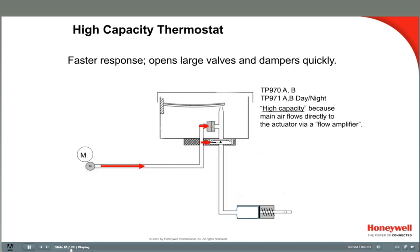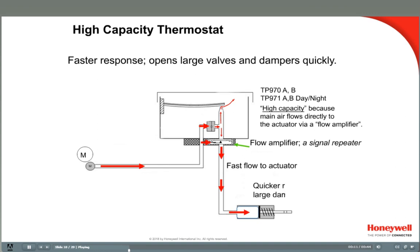The branch line output of a high-capacity thermostat responds very quickly due to the addition of a flow amplifier. Main air still travels through the restrictor to the nozzle bleed, but it also flows to a flow amplifier module prior to the restrictor. The nozzle pressure acts against the flow amplifier diaphragm, which repeats this signal into the branch line with high-volume air from the main air supply. This positions actuators quickly, providing fast response to changing loads and larger actuators. Most installations today use high-capacity thermostats, such as the TP970 or TP971 day-night stats.